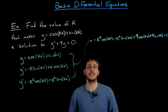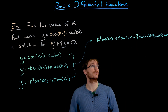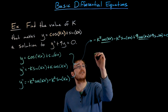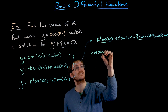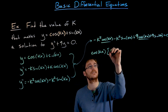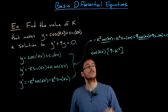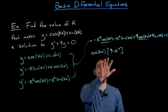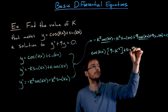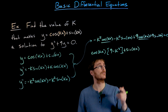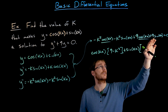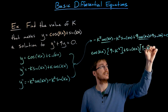To help us find the value of k, let's group our like terms together. We have some cosine terms and some sine terms. If we factor cosine of kx out of those two terms involving cosine, we're left with a positive nine and a negative k squared. So we can factor our equation as cosine of kx times the quantity nine minus k squared. We can do something similar for sine of kx — pulling out sine of kx leaves us with a positive nine and a negative k squared.